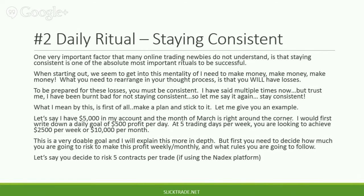Let me give you an example. Let's say I have $5,000 in my account and the month of March is right around the corner. I would first write down a daily goal of, let's say, $500 profit per day. At five trading days per week, you are looking to achieve around $2,500 per week or $10,000 per month. This is a very doable goal. But first, you need to decide how much you're going to risk to make this profit weekly, monthly, and what rules you're going to follow.